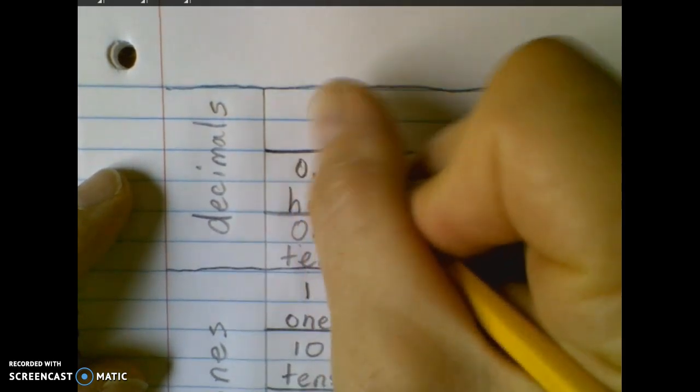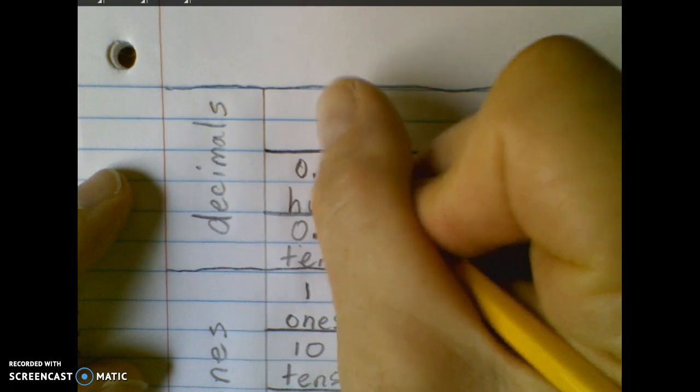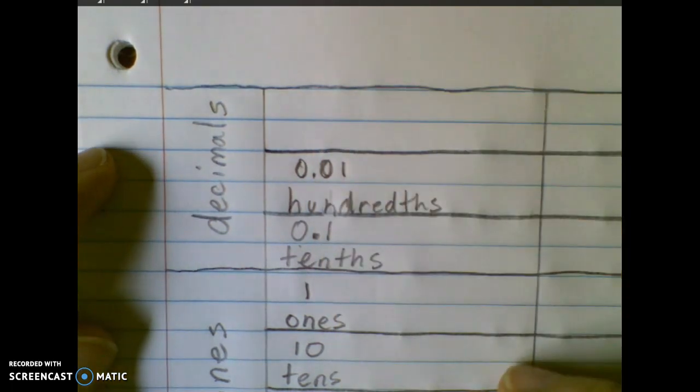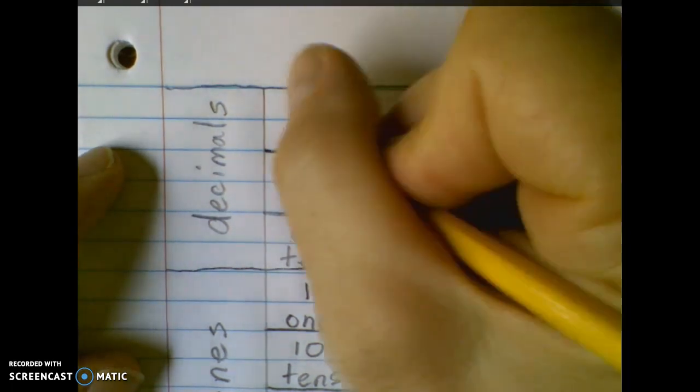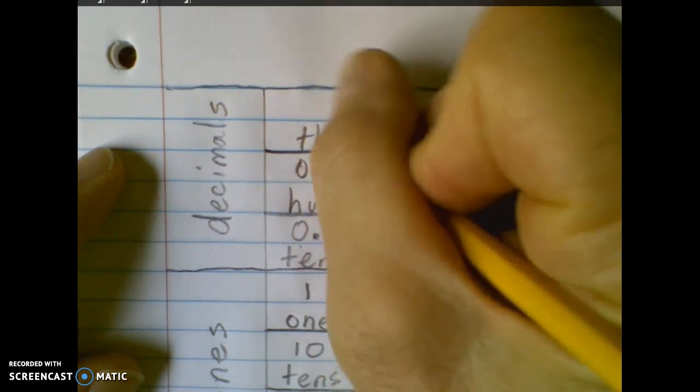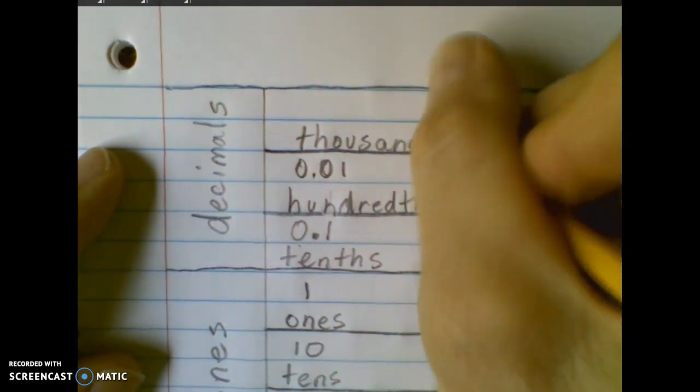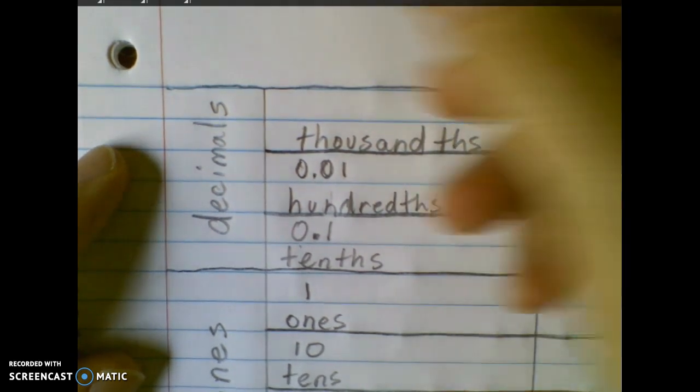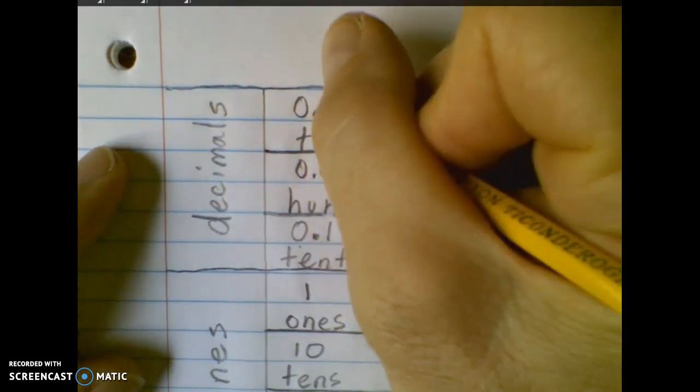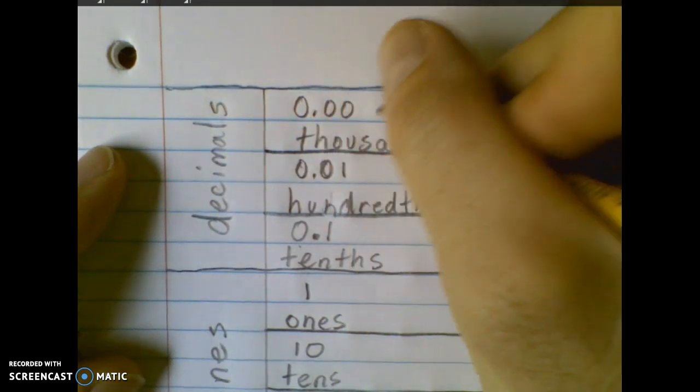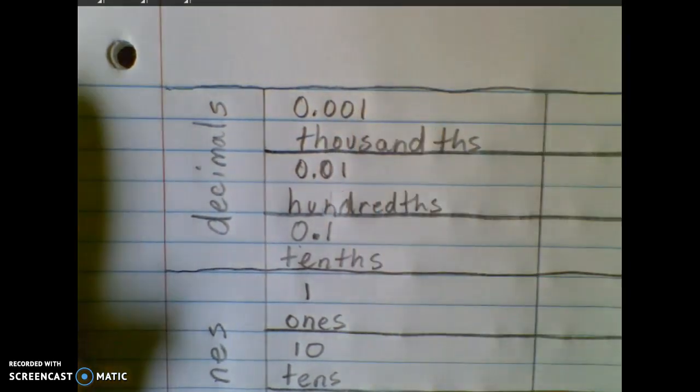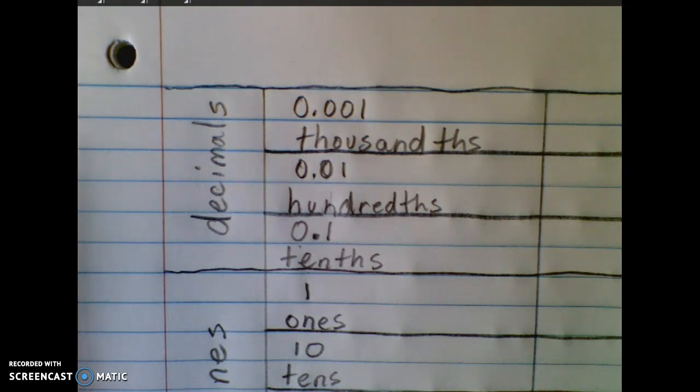Represented by a one in the hundredths place, zero decimal zero one, and a thousandths place represented by zero point zero zero one or a one in the thousandths place.